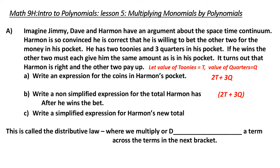What has he got in his pocket afterwards? He's going to have three times as much. So what does he have? He's going to have six toonies and nine quarters. This is the distributive law, where we take the term in front and we multiply it by each term inside the bracket. This allows us to get rid of the bracket. We multiply or distribute a term across the terms in the next bracket.